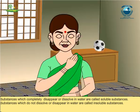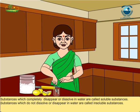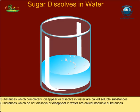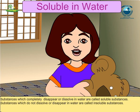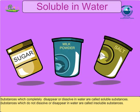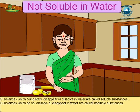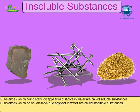Hello Nani, how are you? Is it very hot out there? I will make nimbu paani for you. What a magic, Nani! Where have the sugar crystals gone? As sugar is soluble in water, so it disappears. Substances which completely disappear or dissolve in water are called soluble substances. Do all things disappear or dissolve in water? No. All things are not soluble in water. Substances which do not dissolve or disappear in water are called insoluble substances.